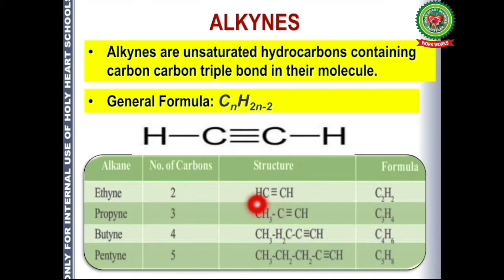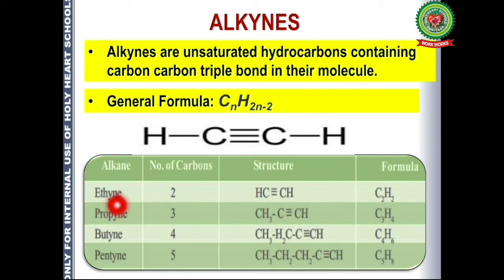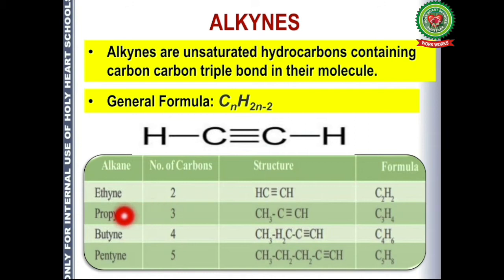So supposing if the carbon number is 2, it will have the structure CH≡CH, and the name will be ethyne — because there is a triple bond, the suffix '-yne' is used, and since there are two carbons the root word is 'eth-'. Similarly, for three carbons it will be propyne, for four carbons butyne, and for five carbons pentyne, and so on.